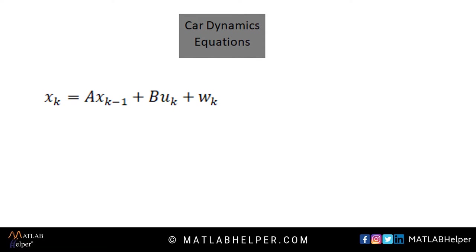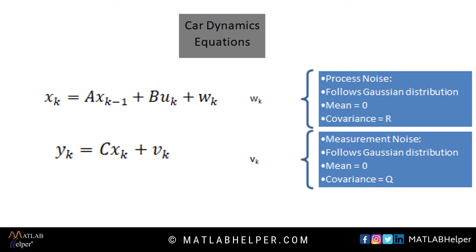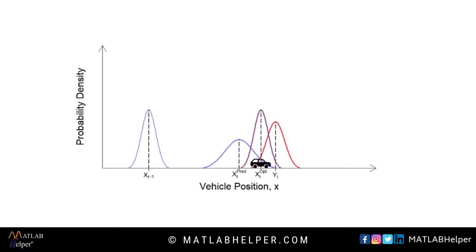Let us look at the car dynamic equations. Wk is the process noise with mean 0 and covariance R. Vk is the measurement noise with mean 0 and covariance Q. In general, naturally occurring phenomena follow normal distribution, also known as Gaussian distribution. The Gaussian curve is called the probability density function for normal distribution. The measurement errors are said to be distributed normally. This assumption is of significance in the Kalman filter design.